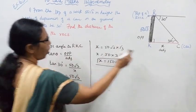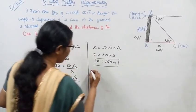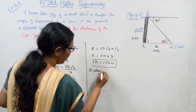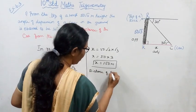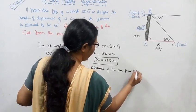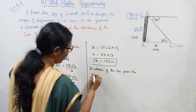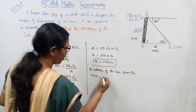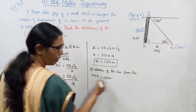Therefore, x equals 150 meters. The distance of the car from the rock is 150 meters.